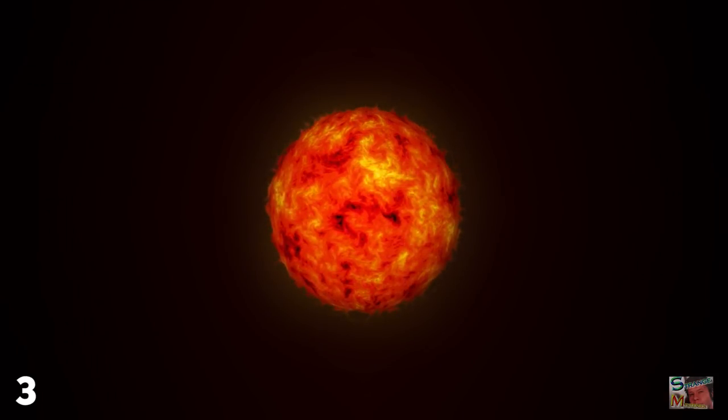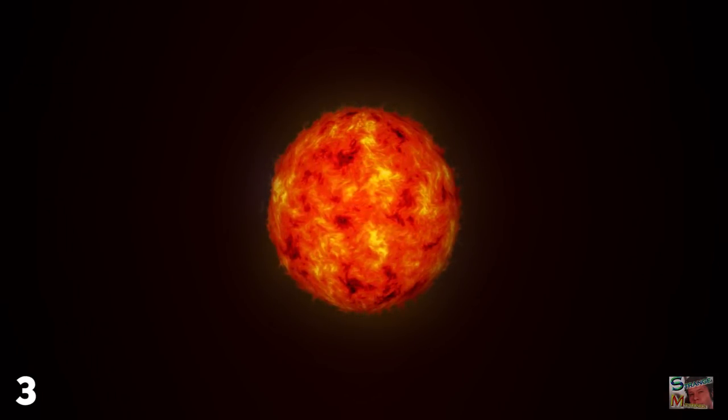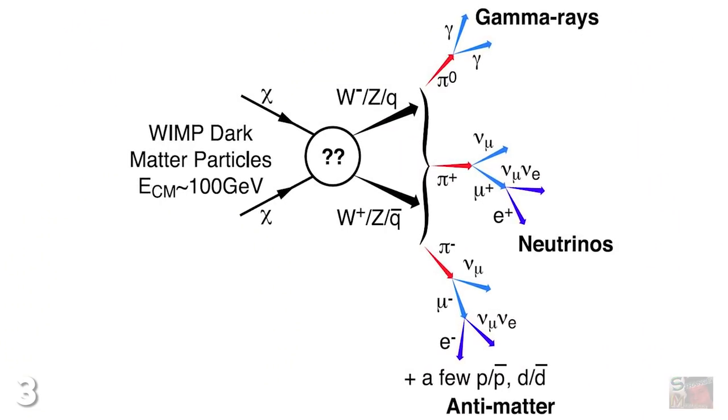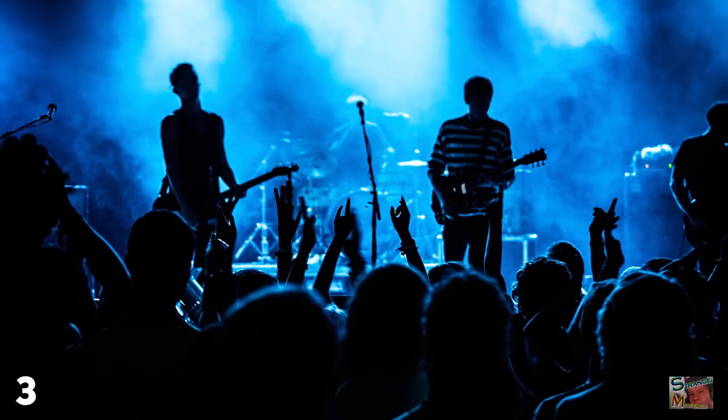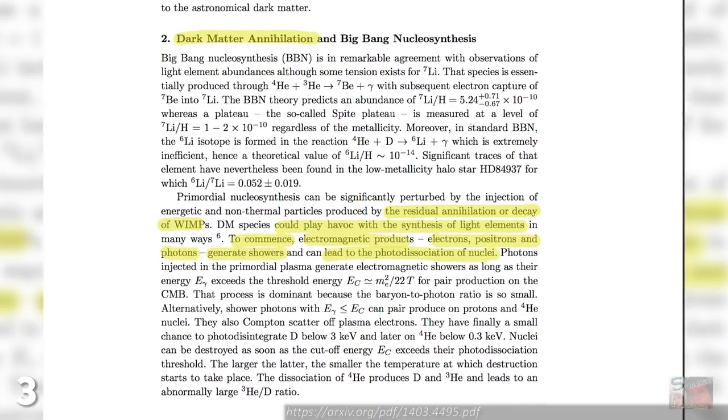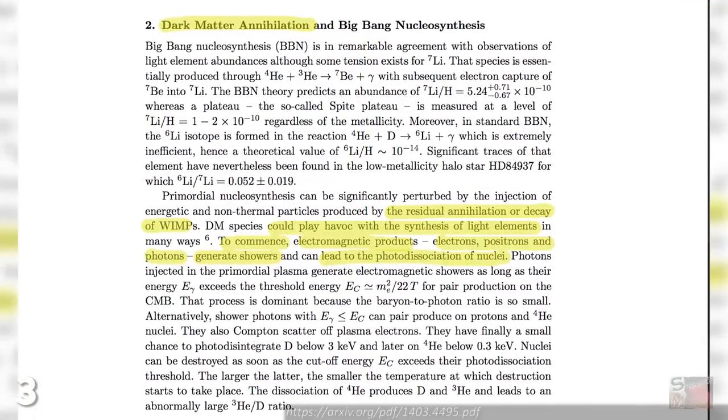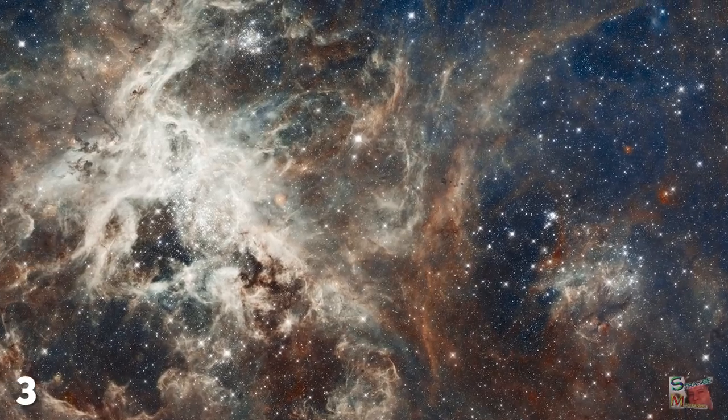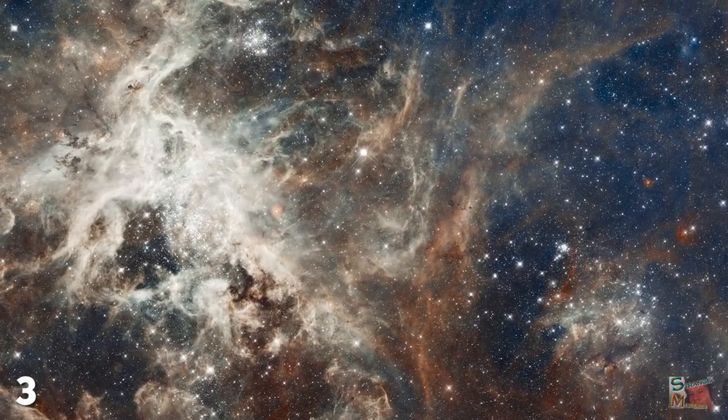However, while stars like our sun are fueled by internal fusion processes, dark stars get their juice from dark matter annihilation, which would be a great name for a Norwegian black metal band. A dark matter annihilation event would produce photons, electrons, and positrons, with all of this stuck firmly inside the collapsing cloud of helium and hydrogen.